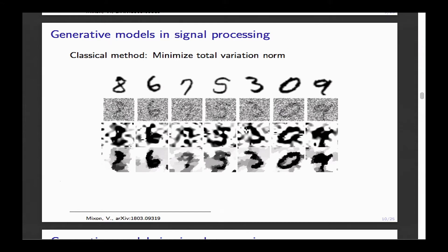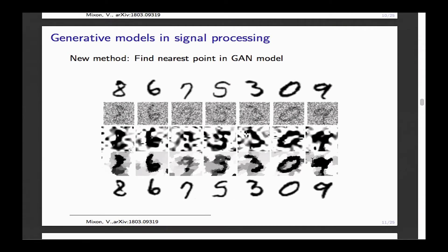Then I train a generative adversarial network and use it as a prior for my data. The denoising step finds the nearest point to the noisy image in the image of my GAN generator. When I do this, I actually find the right number, but it doesn't look exactly as expected, because the latent space has a cluster structure. Still, this is what you can do if you have this kind of structured prior.